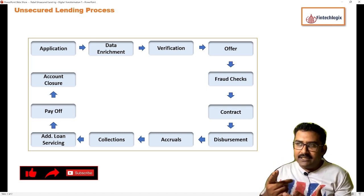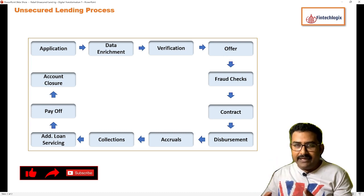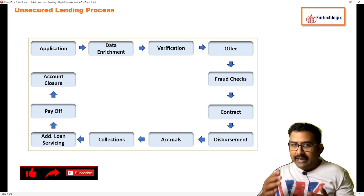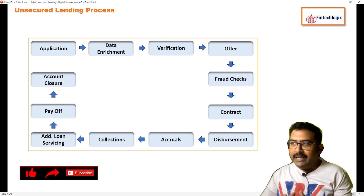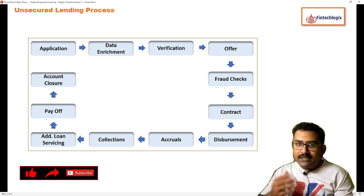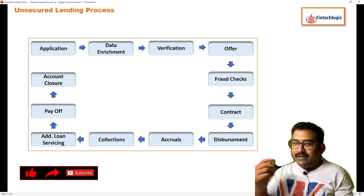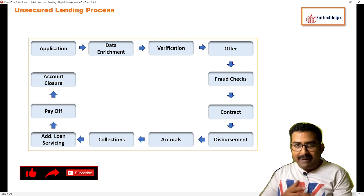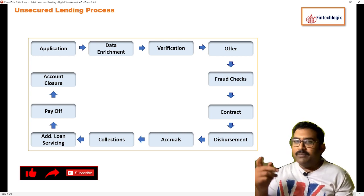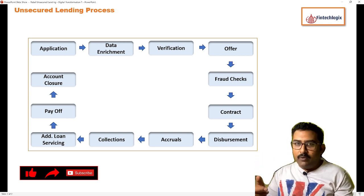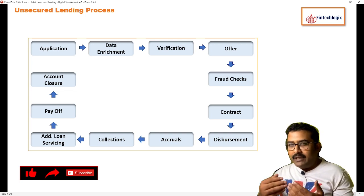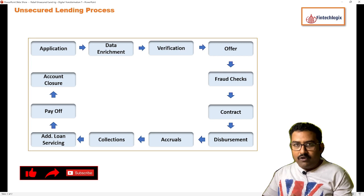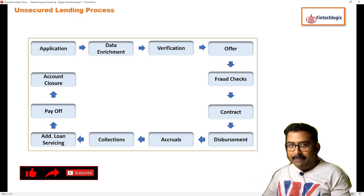Once the application is done, we go towards data enrichment — data enriched from multiple sources. Verification is next; once your details are received you do a verification, which might be manual or automated. Then we do offer generation, and post offer generation there would be fraud checks. A contract would be created and the disbursement will happen.